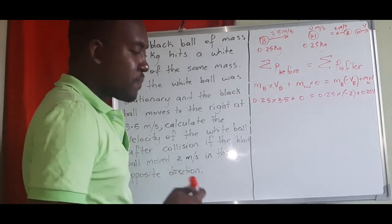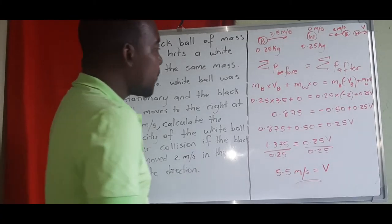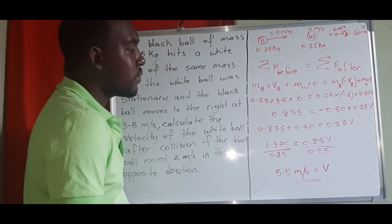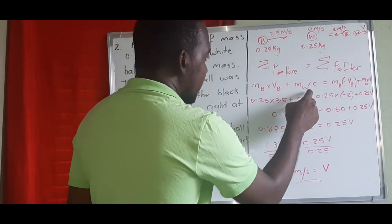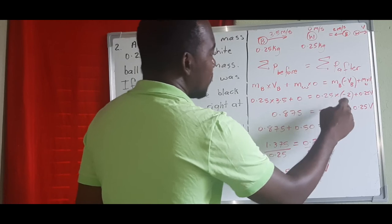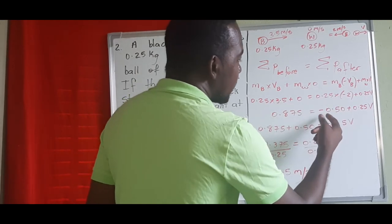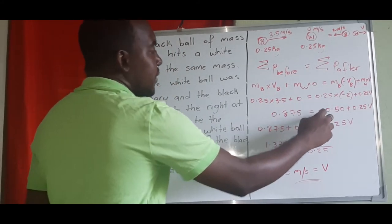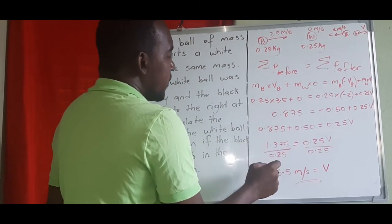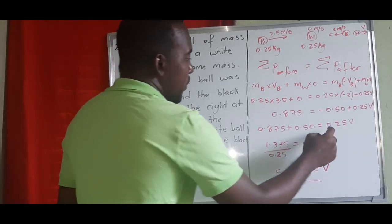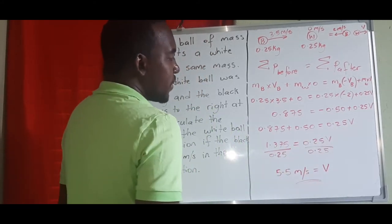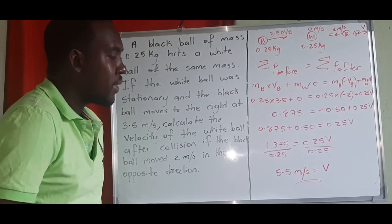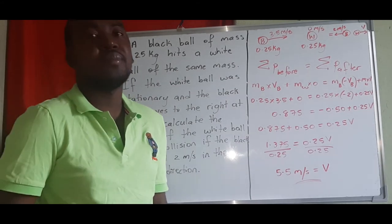Rearranging — the negative term moves to the left side and becomes positive — we get 0.875 plus 0.5 equals 0.25v, which gives 1.375 equals 0.25v. Dividing both sides by 0.25, we get the velocity of the white ball to be 5.5 meters per second.